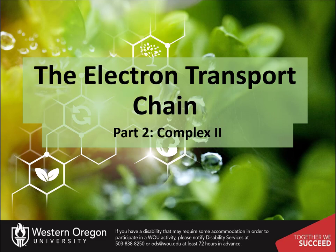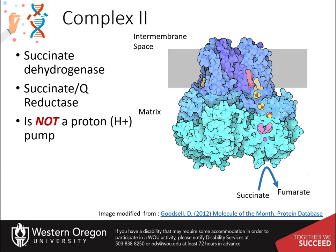Welcome to part 2 of our lecture on the electron transport chain. Complex 2 in the electron transport chain is also an enzyme involved in the Krebs cycle. The succinate dehydrogenase enzyme is directly involved with the transfer of electrons to coenzyme Q.